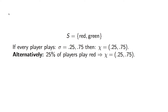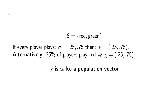In that example we had a strategy set S of red or green. Similarly, if every player plays the mixed strategy sigma equals .25 and .75, then chi — which is called the population vector — would be .25, .75. In other words, what is the distribution of the strategy within our population? But we could alternatively have that 25% of the players play red, in which case chi would also be .25 and .75.